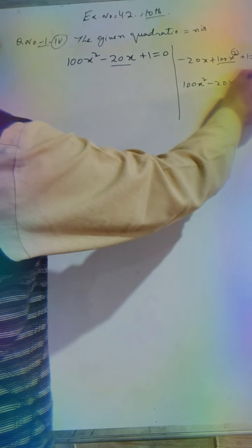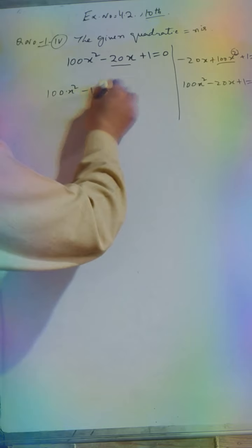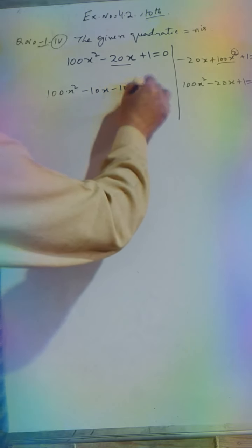So this is the middle term: 100x² - 10x - 10x + 1 = 0. We split the middle term -20x into -10x and -10x.